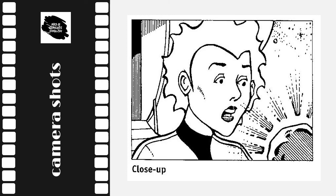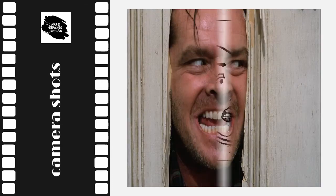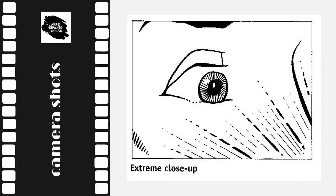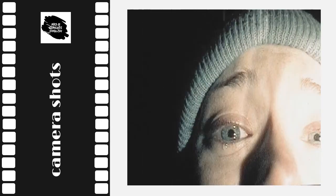A close-up contains almost no background, but focuses on the whole of an object or a person's face. This frame showing Jack Nicholson in the 1980 film The Shining is a fine example of the effective use of a close-up on a character's face — you're supposed to be disturbed by this picture. An extreme close-up focuses on an aspect of an object in great detail or a part of a person's face, such as the label on an item of clothing or a newspaper headline. This extreme close-up from the Blair Witch Project highlights the sheer terror experienced by the character.